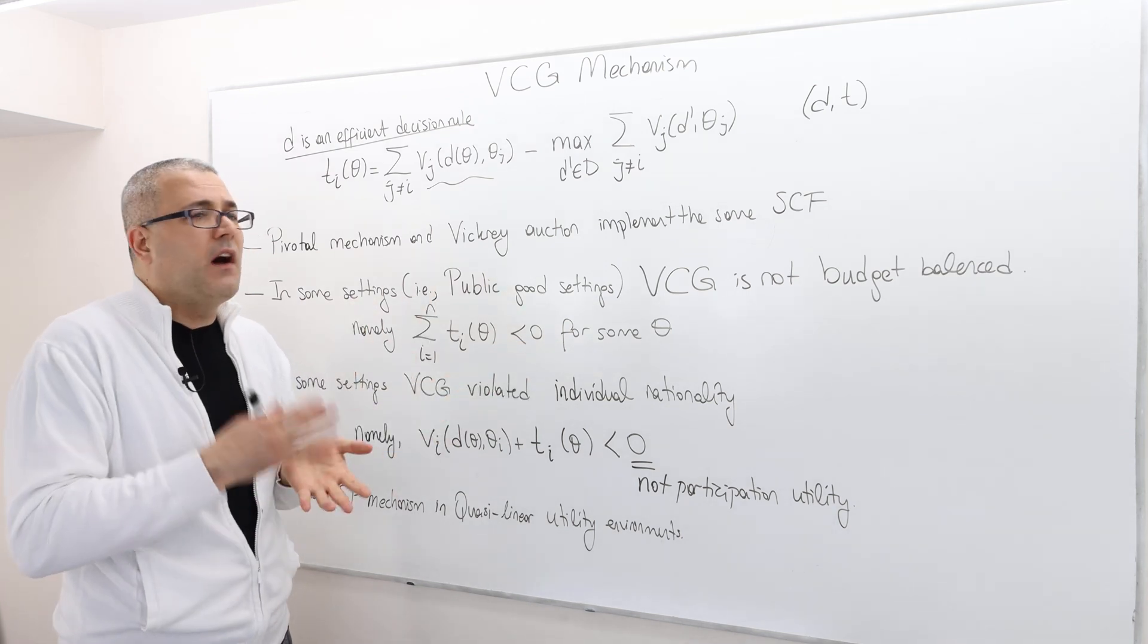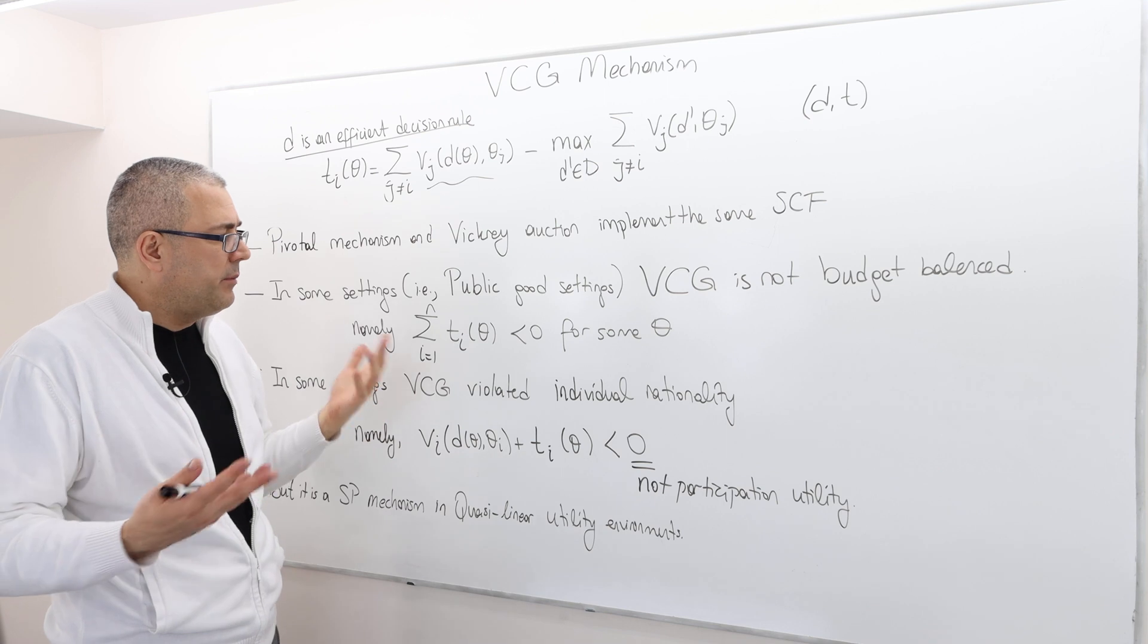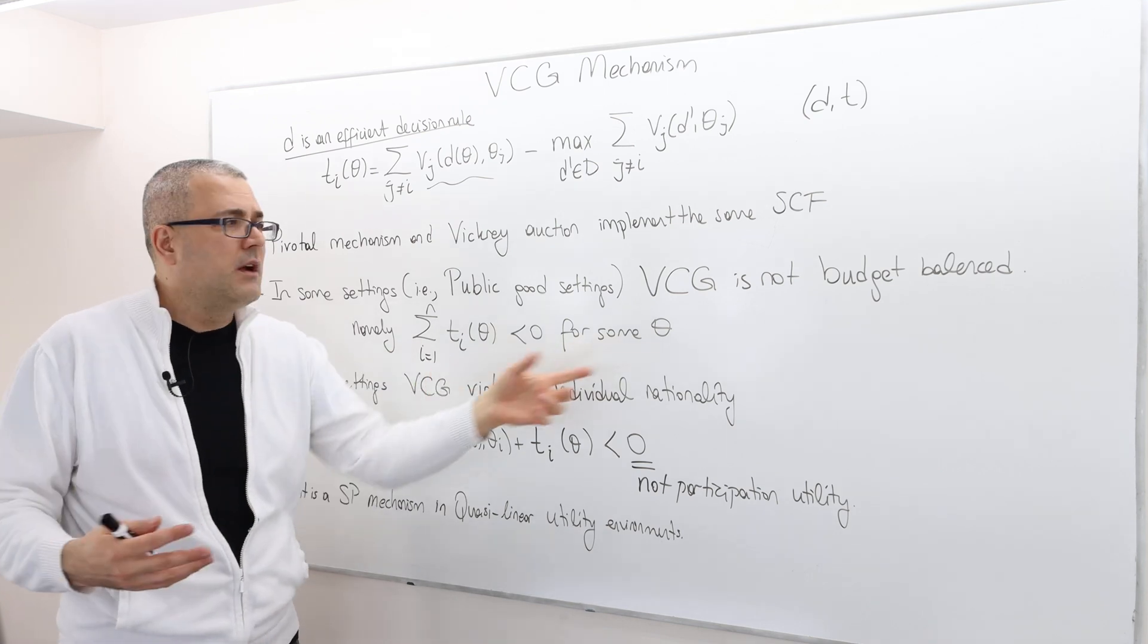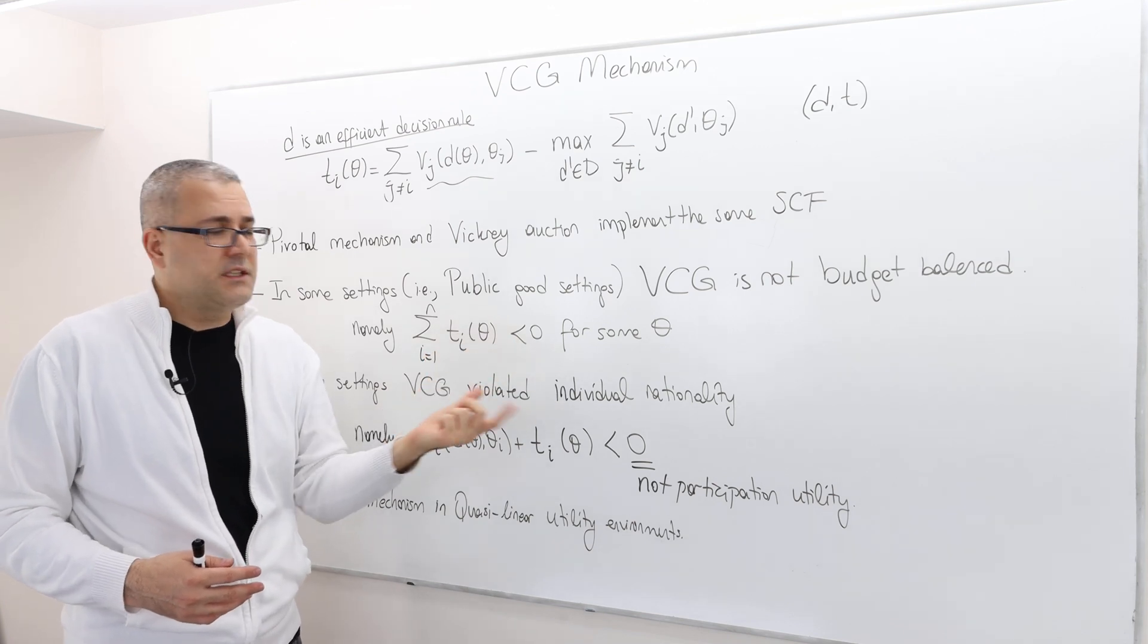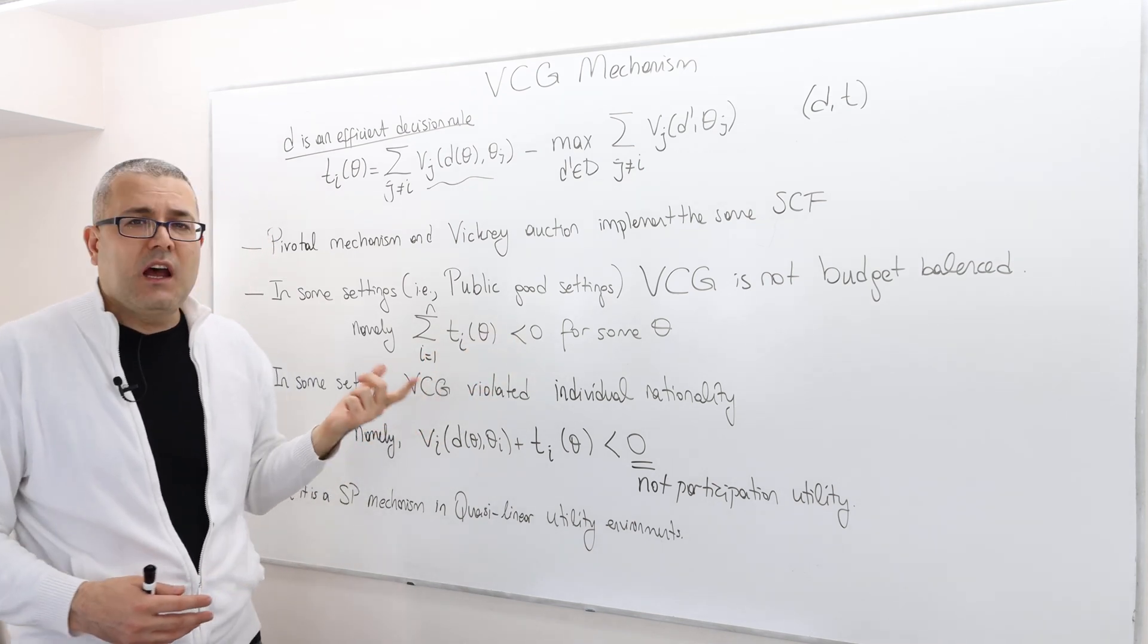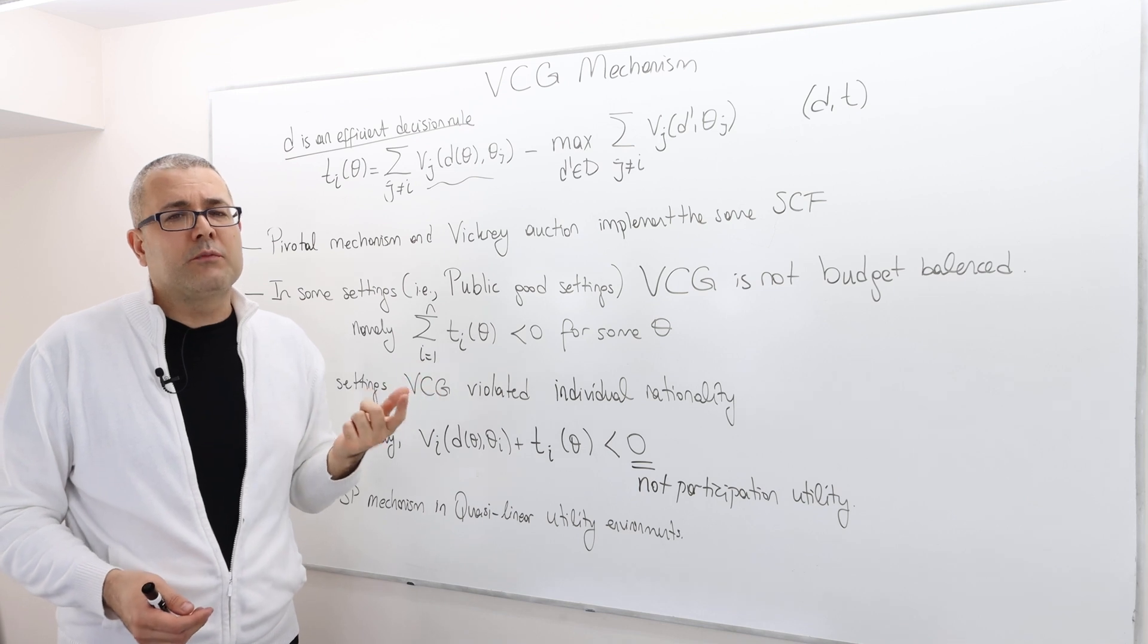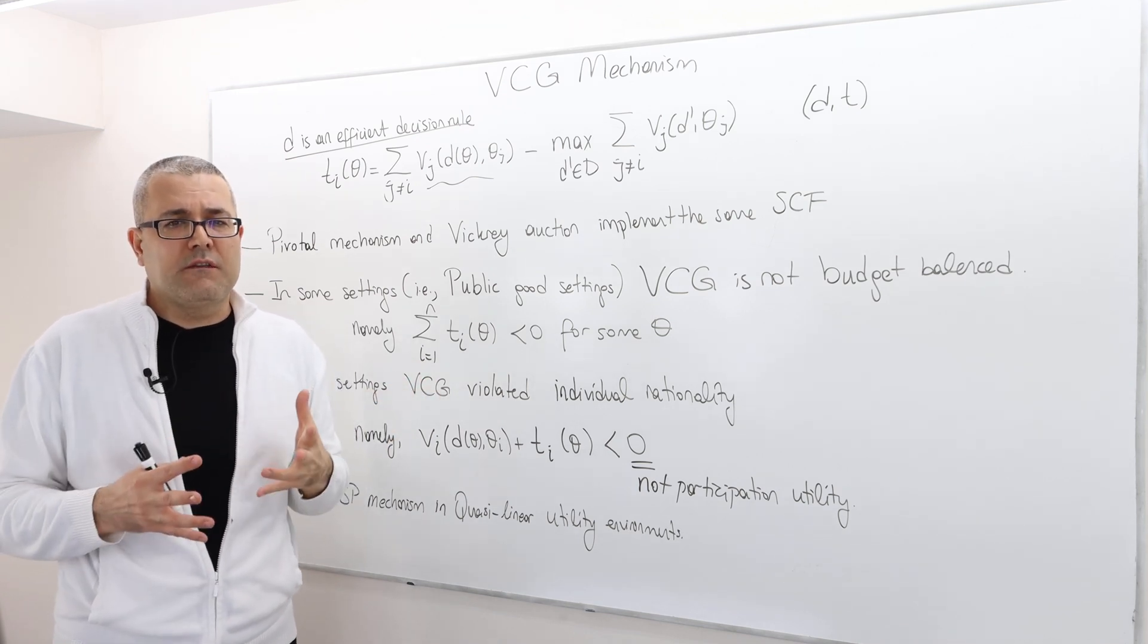But so VCG violates budget balancedness basically means there are some type profiles where the summation of the transfers is strictly less than zero. Well this is not an important problem for example in the auction environment. Why?